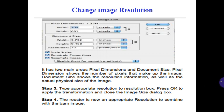Step number 6: type the appropriate resolution in the resolution box. Press OK to apply the transformation and close the Image Size dialog box. Step number 7: the image is now at an appropriate resolution to combine with the other image.